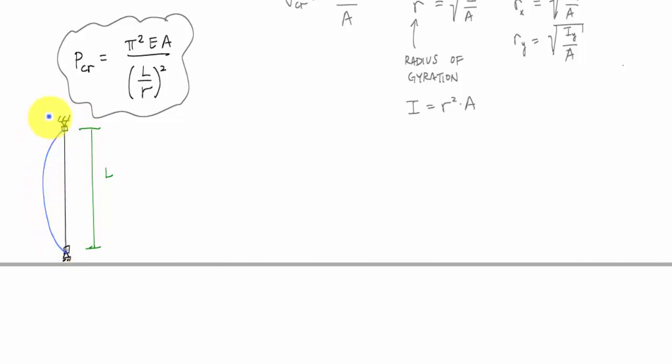And essentially, the entire length of my column buckled. This is the buckled length, and I'm going to call this L sub E, the effective length that buckles.